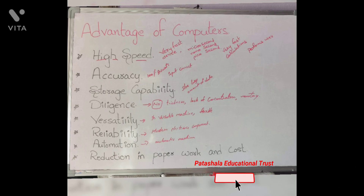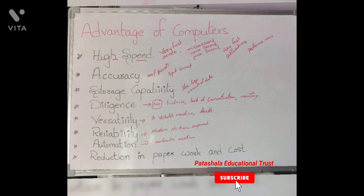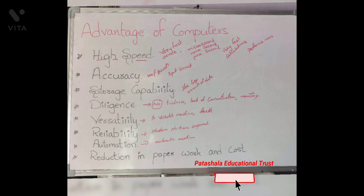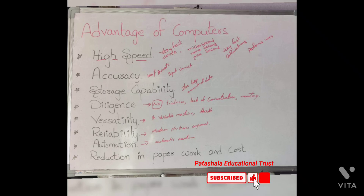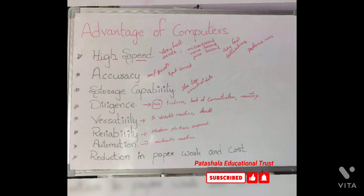Reliability: a computer is a reliable machine. Modern electrical components have long lifespans, and computers are designed to make maintenance easy. Automation: a computer is an automatic machine. Once a computer receives a program, it is stored in memory, and the program instructions can control execution without human interaction.